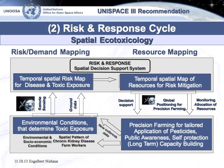For ecotoxicology, we are also looking at a temporal-spatial risk map for a disease or toxic exposure. On the response side, the allocation of resources and use of space technology focuses, for example, on precision farming for tailored application of pesticides. This includes low-cost precision farming approaches using smartphone technology that accesses risk mappings for a specific area of agricultural production. There are two sides of benefits: the economic side of pesticides reduction, and the public health benefit by minimizing exposure to pesticides for farm workers and people living in that area.